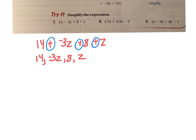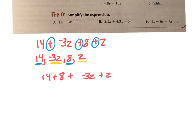The ones I have in common that are like: 14 is a constant and 8 is a constant. So I can put those together — 14 plus 8. Then I'm going to add my other like terms. This has a z, this has a z, so it's negative 3z plus z. So I have those as my like terms, and these as my like terms.